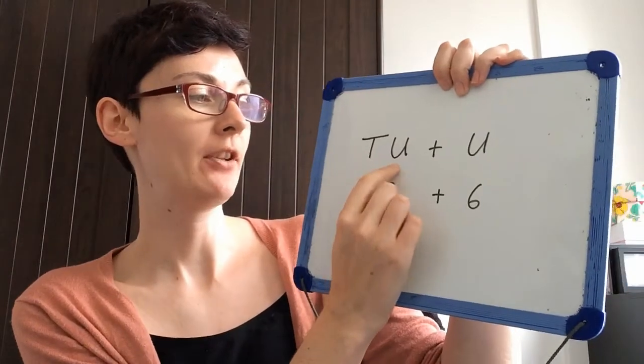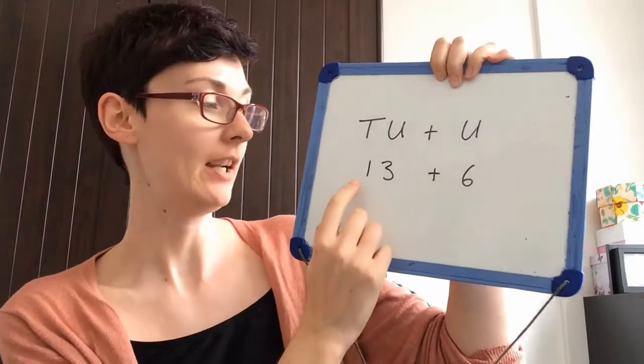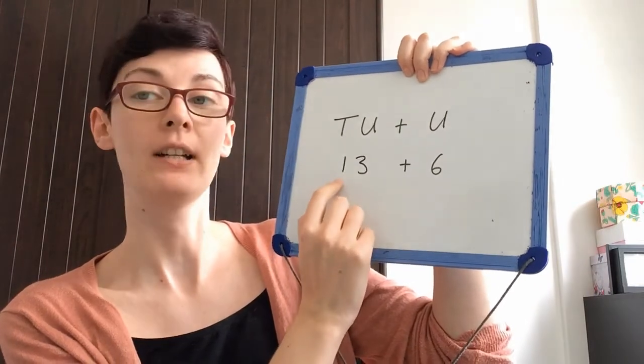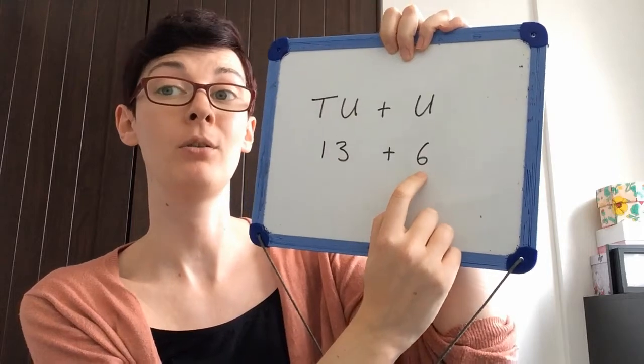So that means I'm going to be adding a number with two digits to a number with one digit. For example I could do 13, that's got a tens and a units, plus 6 and this number is only a unit.